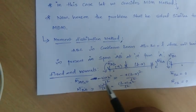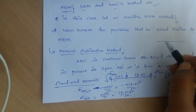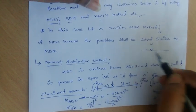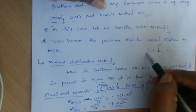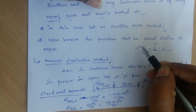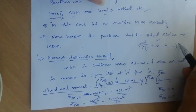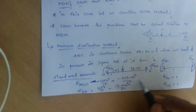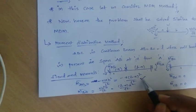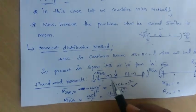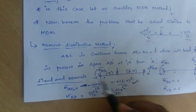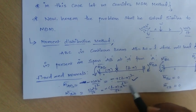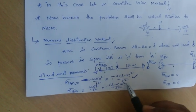The fixed-end moments are derived from the standard formula: for a fixed beam carrying a concentrated load W at distance A from the left and B from the right, the fixed-end moments are W·A·B²/L² and W·A²·B/L². Applying this, the fixed-end moment for span AB is minus X(L−X)²/L² (anti-clockwise) and plus (L−X)·X²/L² (clockwise).